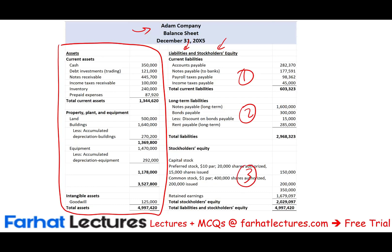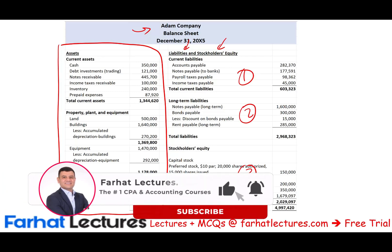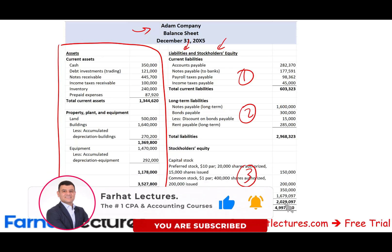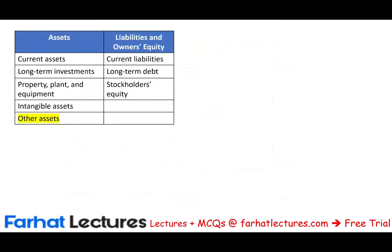Current liabilities will be covered much more in depth later on in its own separate chapter, as will long-term liabilities and stockholders equity. What you need to know for now is an overall view of these categories: current liabilities, long-term liabilities, and stockholders equity. Let's go ahead and get started.